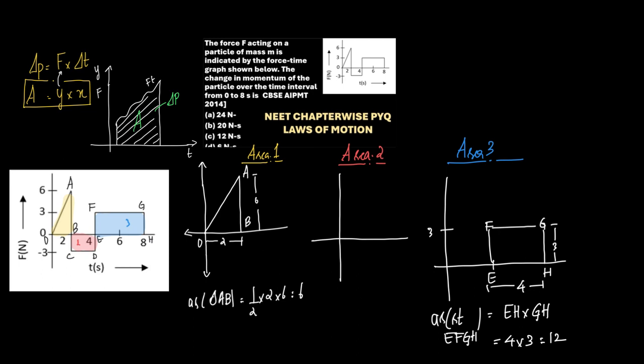Now let us discuss area two. The area is the rectangle BCDE, which is BC into CD. BC here is 0 to 3, which is 3, and CD is 2 to 4, which is 2. But this is where most students make a mistake. If you observe the y-axis, BC corresponds to negative y, so it's 0 to minus 3. Therefore BC is minus 3, and the second area is minus 6.